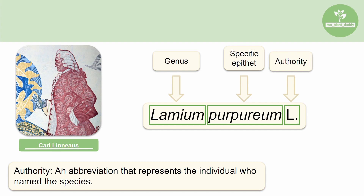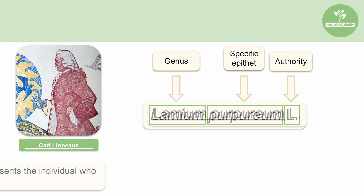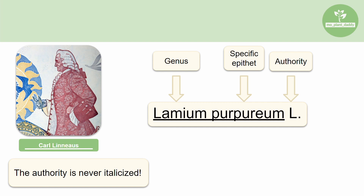The only exception is if the species name is being written on paper. If you are writing the name down, the Latin binomial should be underlined instead of being italicized. The authority still does not get underlined, though.